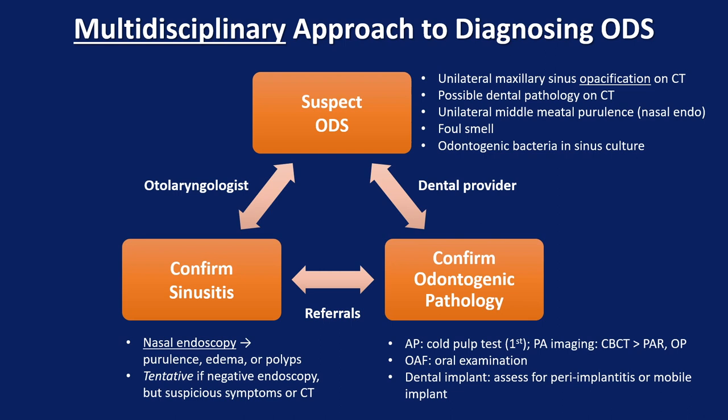These five features are shown in the top right portion of the figure. It starts with the sinus CT scan — if you see unilateral maxillary sinus opacification, that's highly suspicious for odontogenic sinusitis, especially when associated with possible dental pathology on that CT. Next, if patients have unilateral middle meatal pus or purulence, that is highly suspicious. If patients report a foul smell, that's also suspicious. Lastly, if you find odontogenic bacteria in the sinus culture, that's suggestive but not absolutely confirmatory.